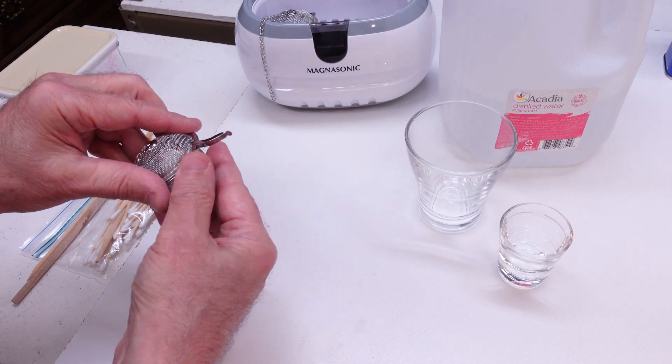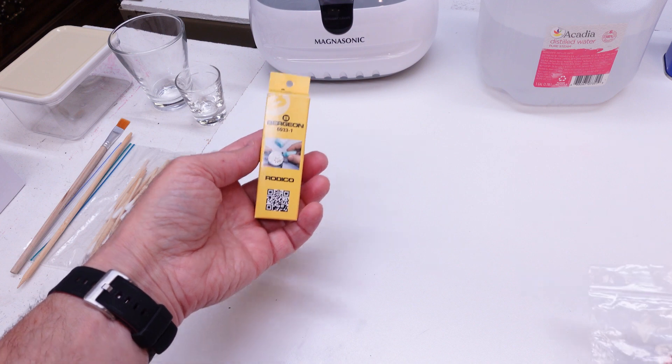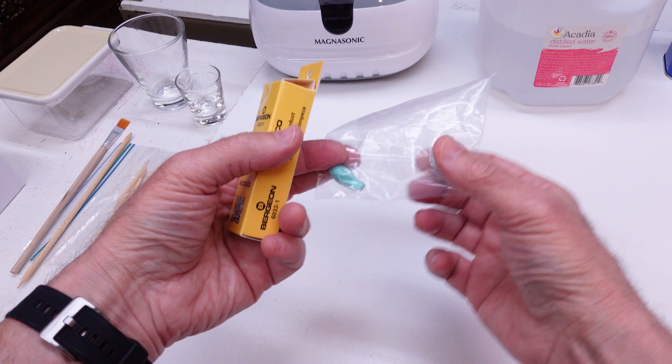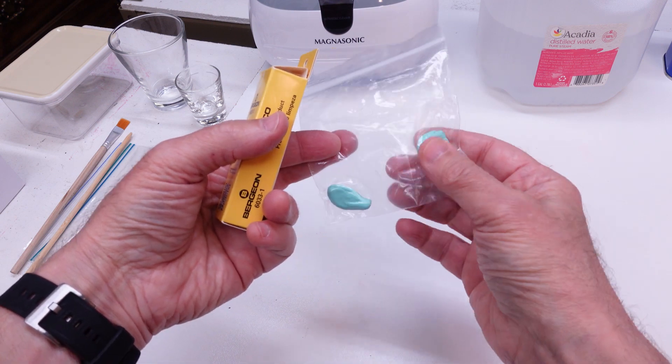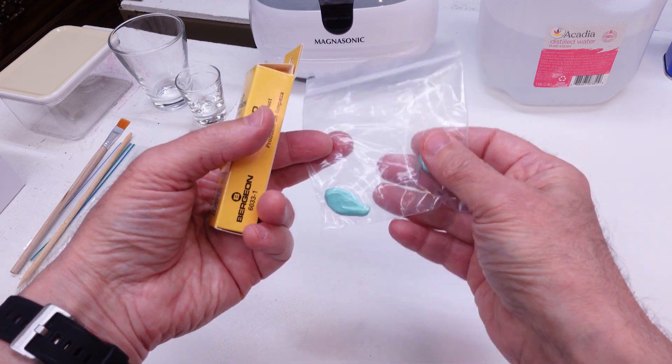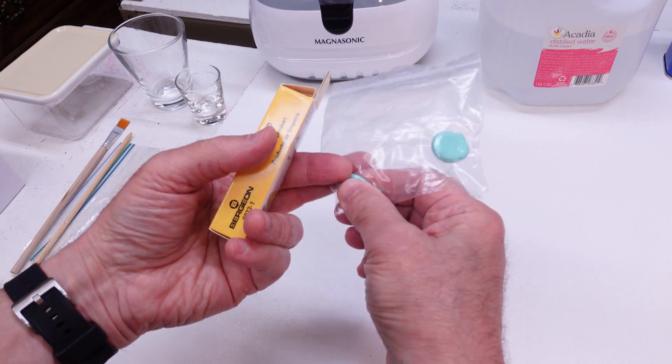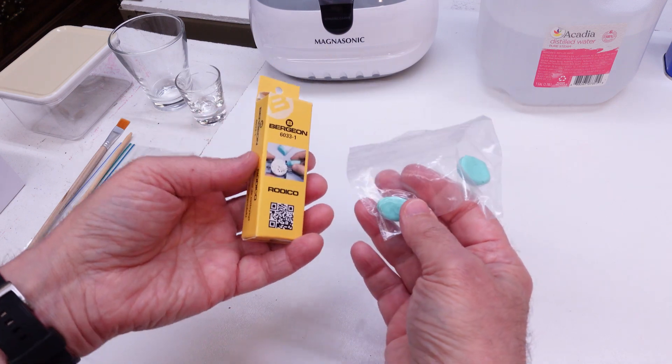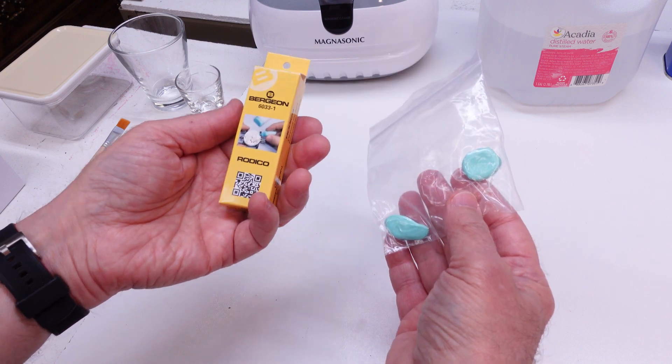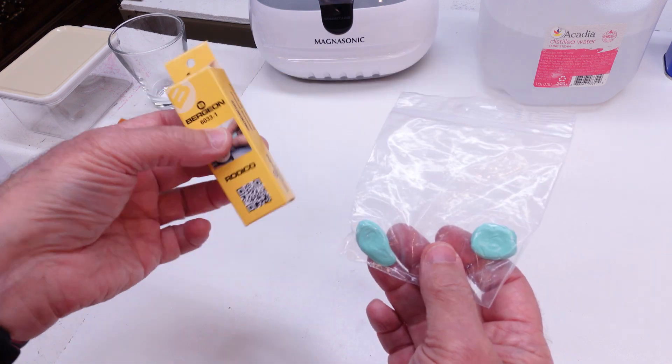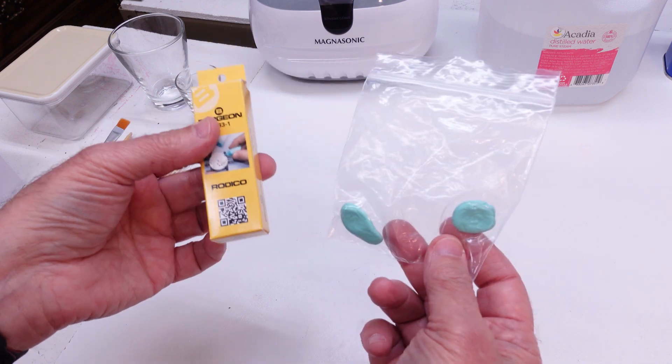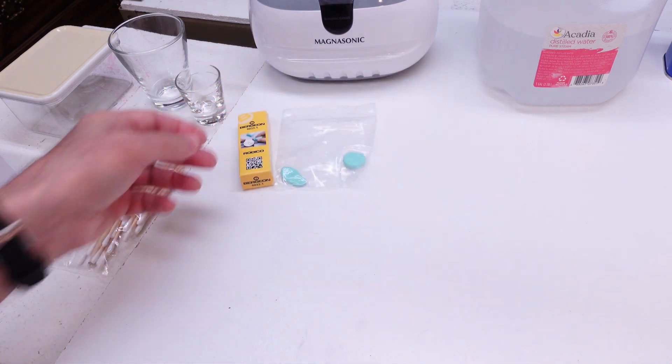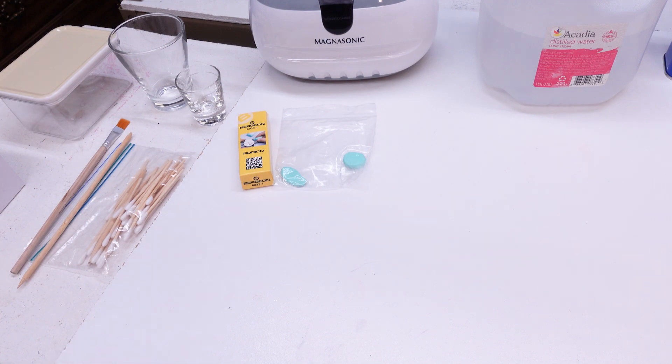Before I move on, I do want to mention this stuff. This is a Radico putty and it's this green clay and this is fantastic for so many things with watchmaking. You can hold parts with it, you can clean up extra oil, you can remove fingerprints. Really, this is inexpensive and it's so versatile and this little investment will pay you back a thousand fold. It's really inexpensive and you'll use it all the time.